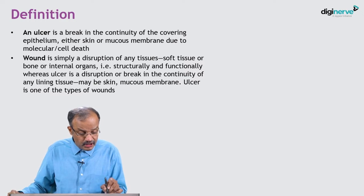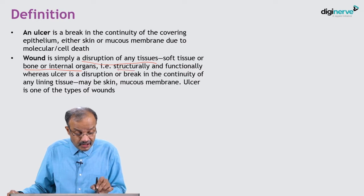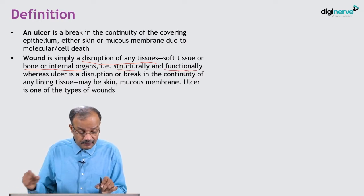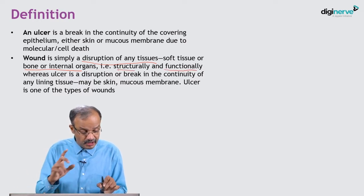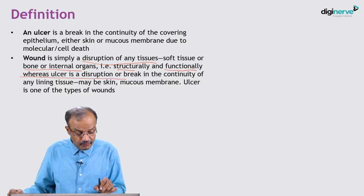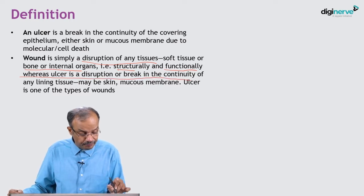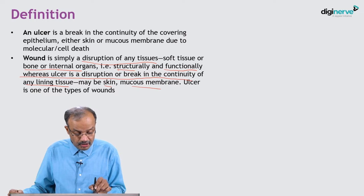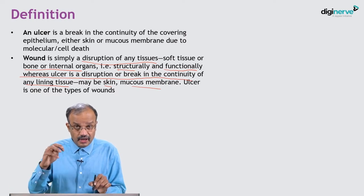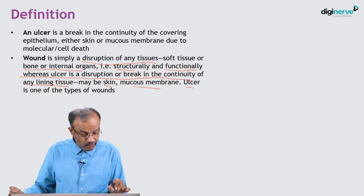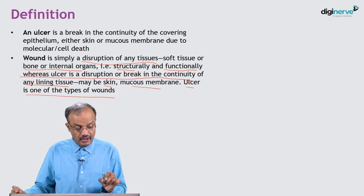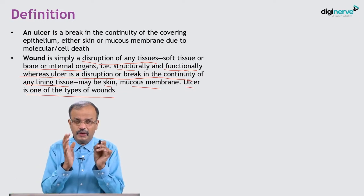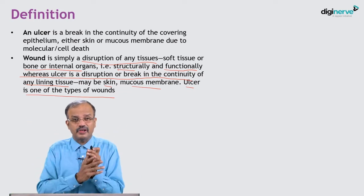Wound is simply a disruption of any tissue - soft tissue, bone, or internal organs - structurally and functionally. That word is very important: structurally and functionally. Whereas an ulcer is a disruption or break in the continuum of the lining of the tissue, maybe skin or mucous membrane. So ulcer is one of the types of wounds - wound is a very broad terminology.